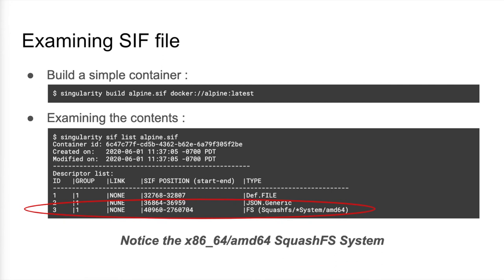So let's build a base container and take a look at the contents of what's inside the file. Here you can see that there are three object blobs or partitions in this file. The first is the recipe definition. The next is some metadata about the container, which is analogous to the config.json in an OCI context. And lastly is the FS partition, which indicates that this is an AMD64 system partition. This is our squashfs file system, which will be directly mounted by the kernel at runtime.